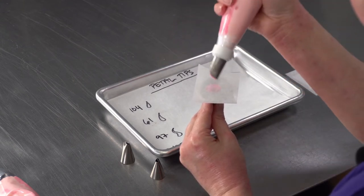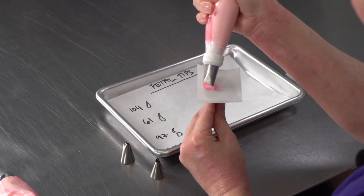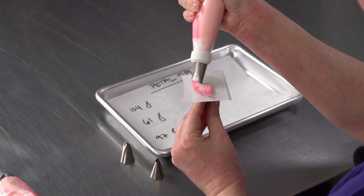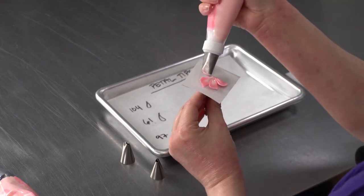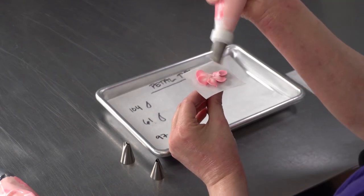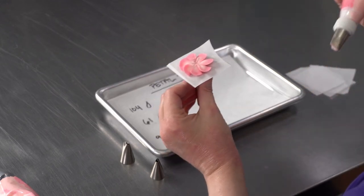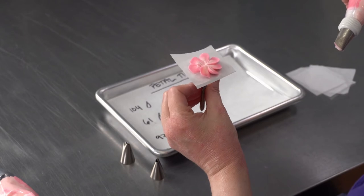You can make petals flat against. So say if we were making a daisy or just another kind of cute flower. And you can see as I'm piping, I'm gently rotating the nail.